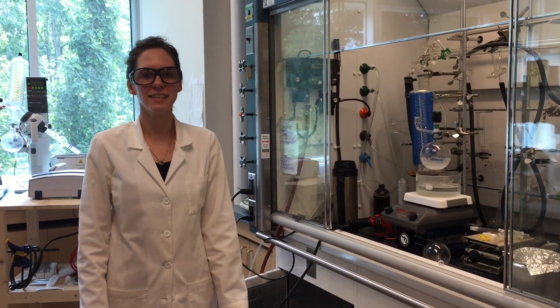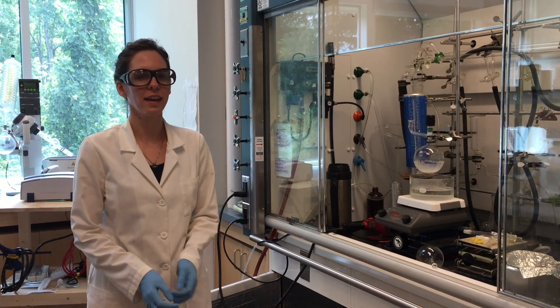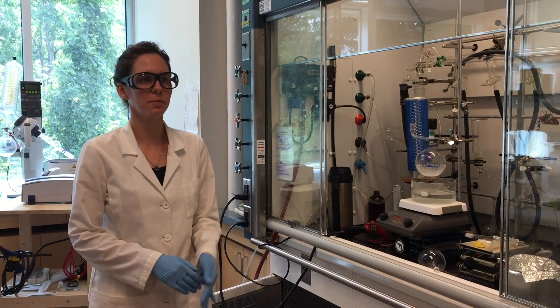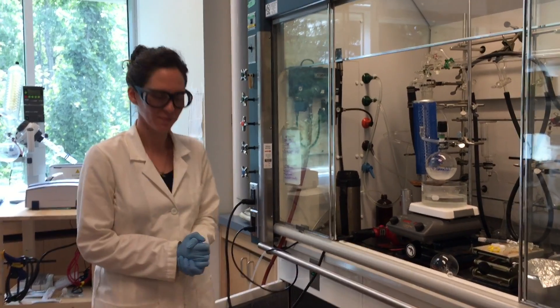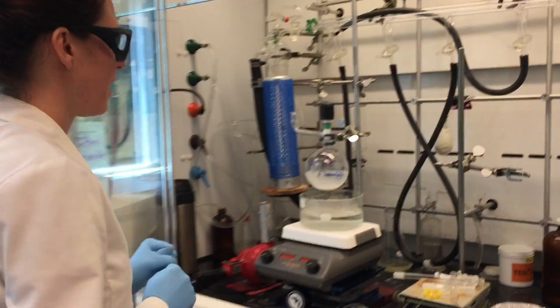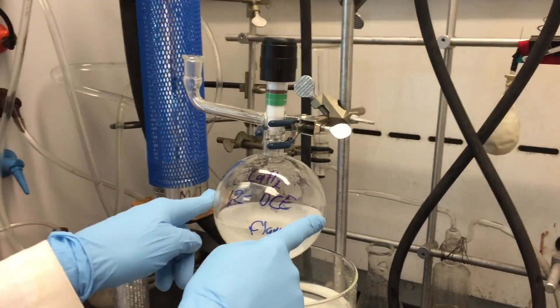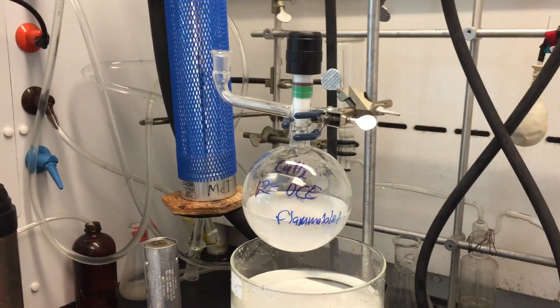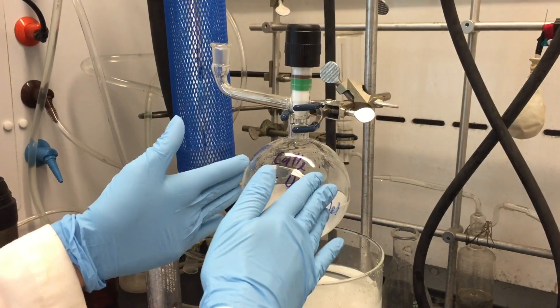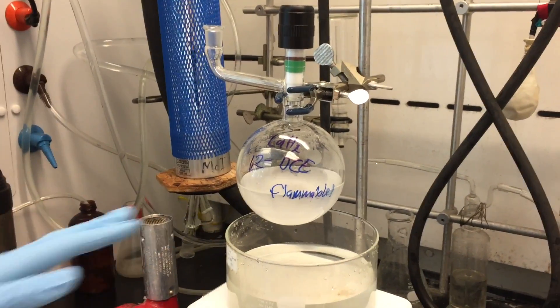So today we're going to do a distillation under vacuum and we're also going to be water free. In here I have solvent that's been drying over calcium hydride. I now want to distill off the solvent and leave the calcium hydride over here.